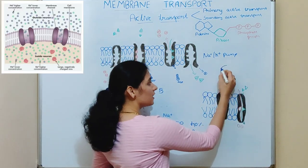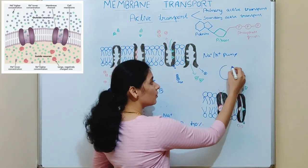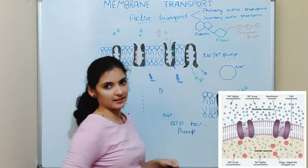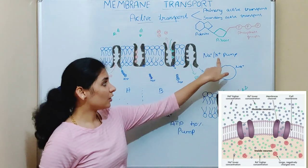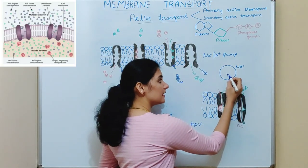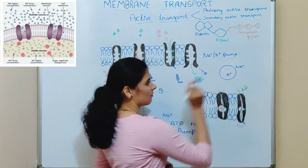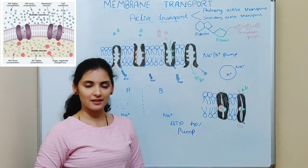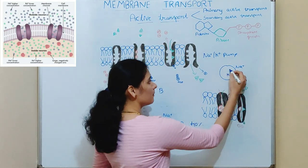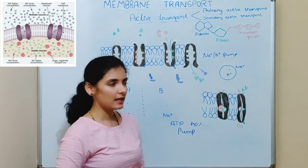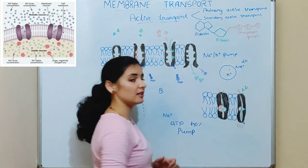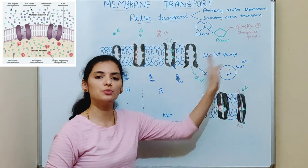Naturally, the concentration of sodium ions is more outside the cell compared to inside the cell. For example, if one sodium ion is present inside the cell, then 20 sodium ions will be present outside the cell — 20 times more.